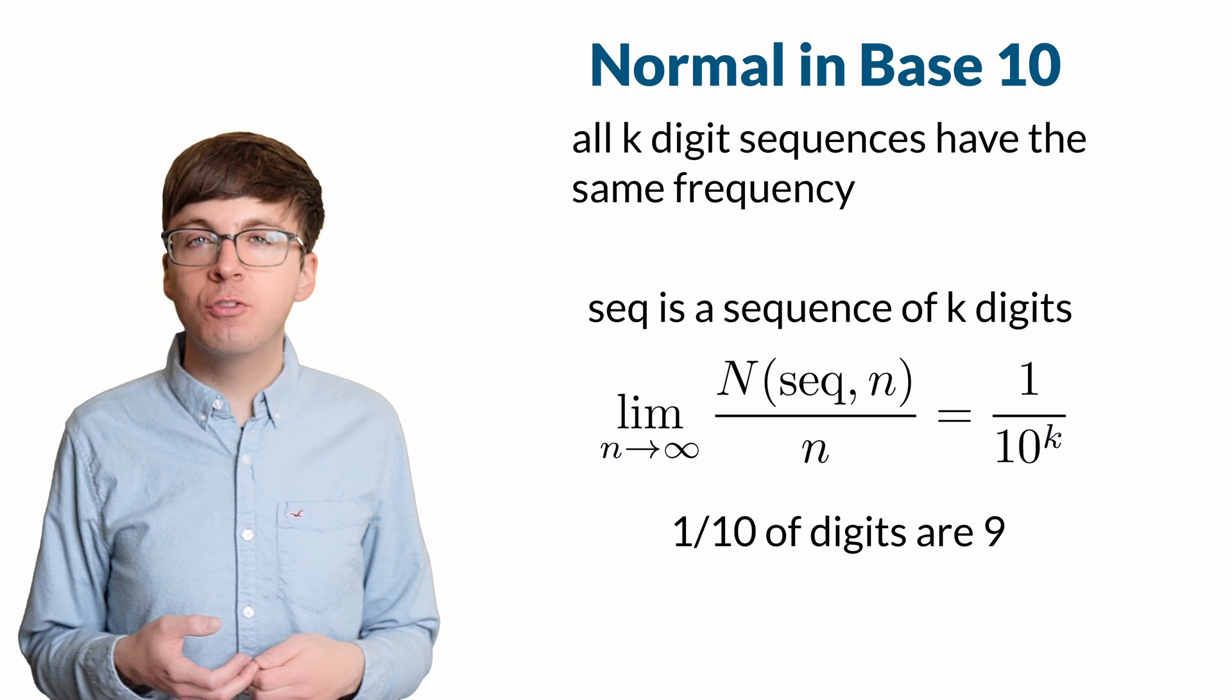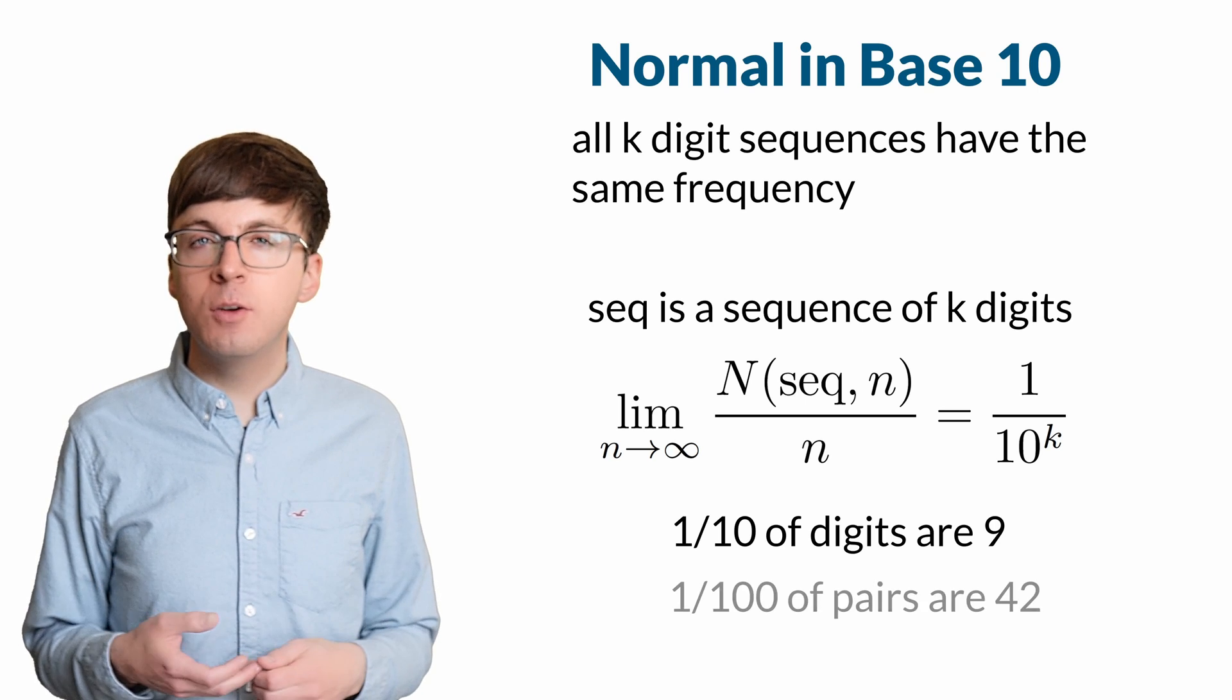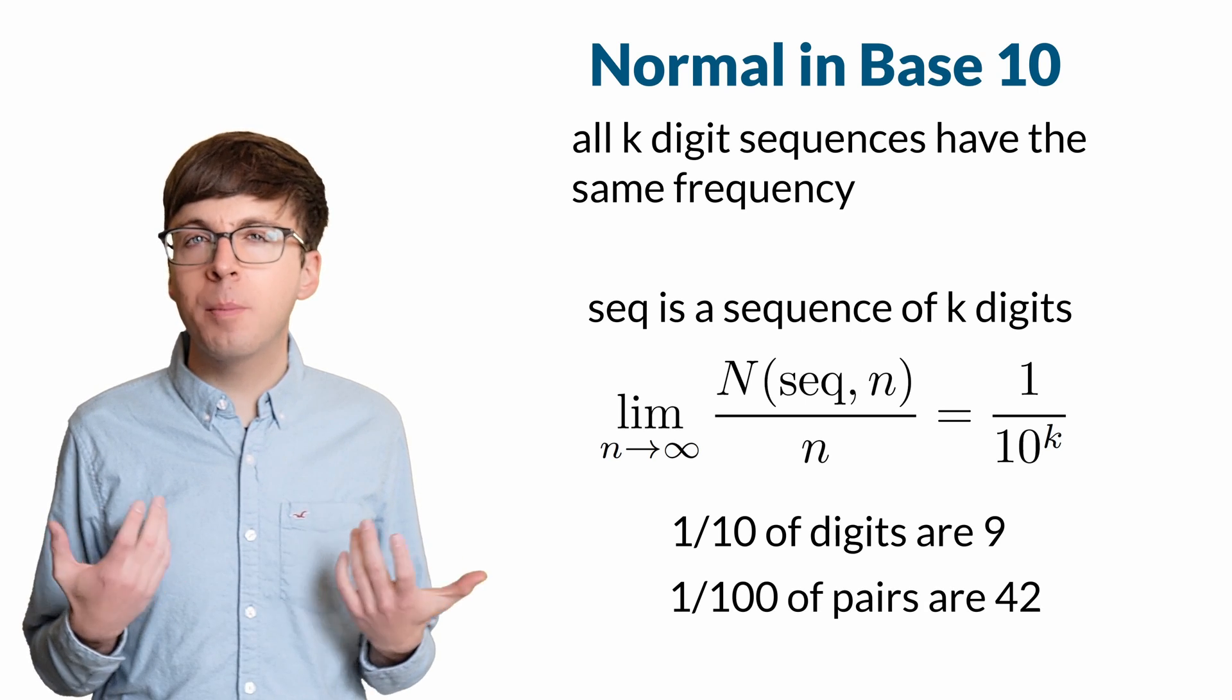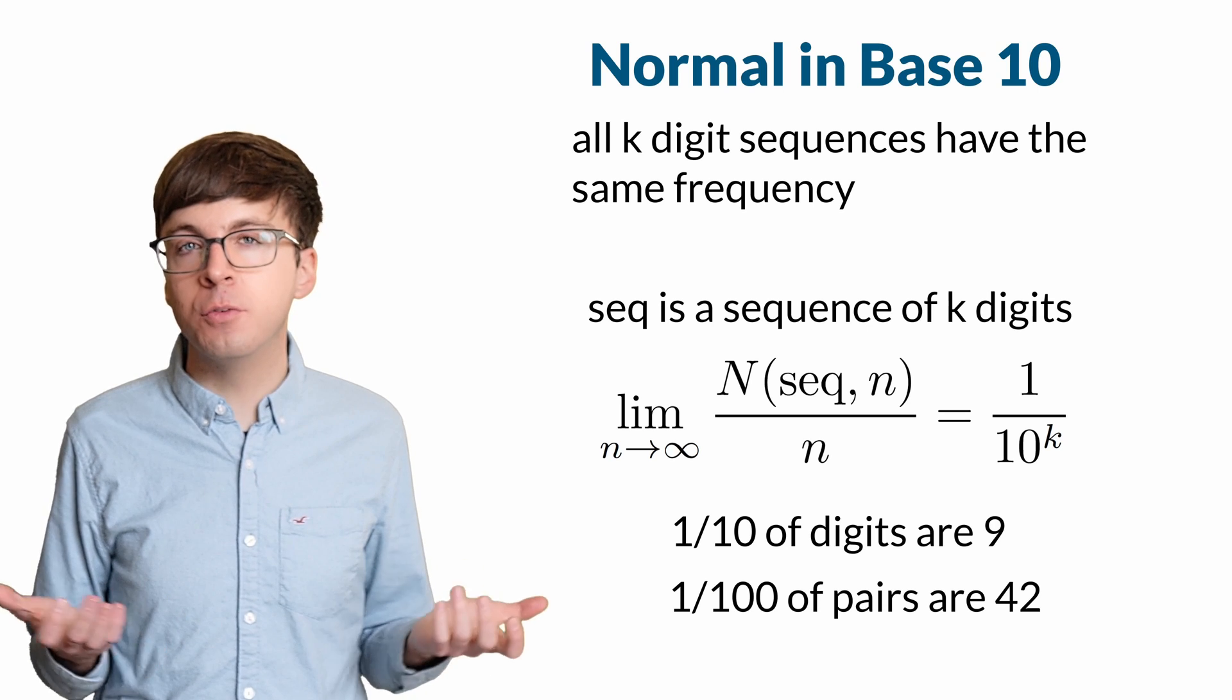For example, 1/10 of the digits should be 9, and the 2-digit sequence 4-2 should show up in 1/100 of all the 2-digit pairs.